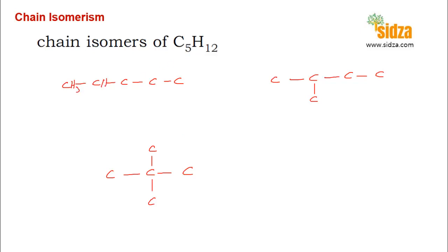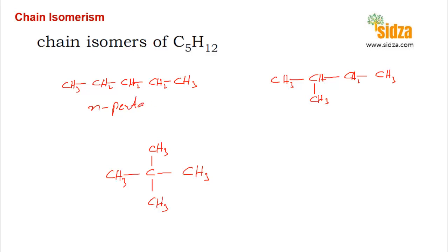The first structure is n-pentane: CH3-CH2-CH2-CH2-CH3. The second structure is isopentane: CH3-CH(CH3)-CH2-CH3. The third structure is neopentane: a central carbon with four CH3 groups attached. So n-pentane, isopentane, and neopentane are all chain isomers of C5H12.